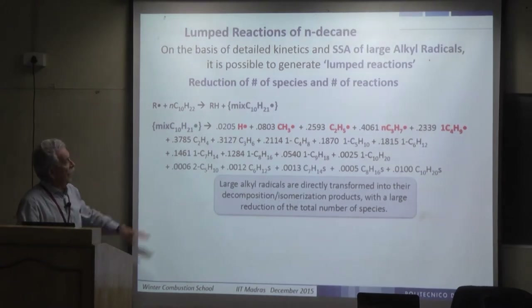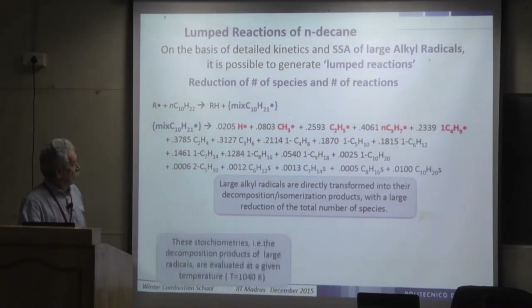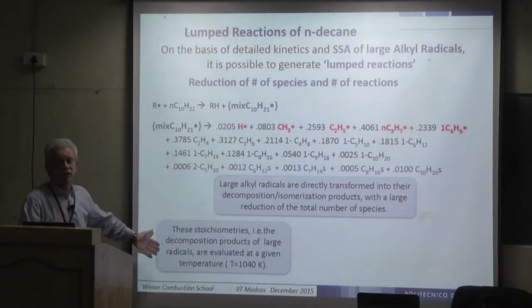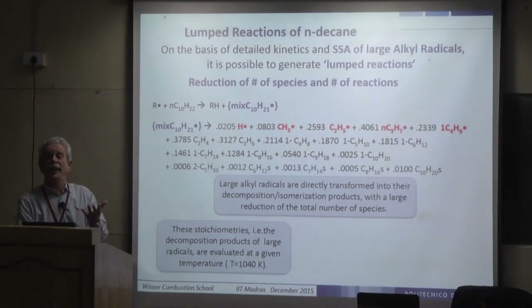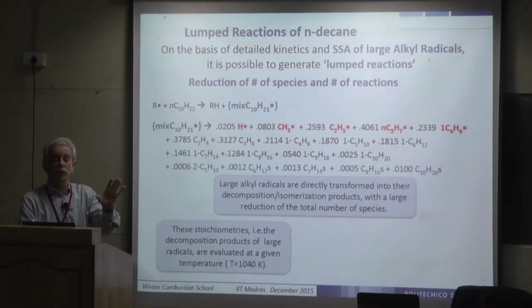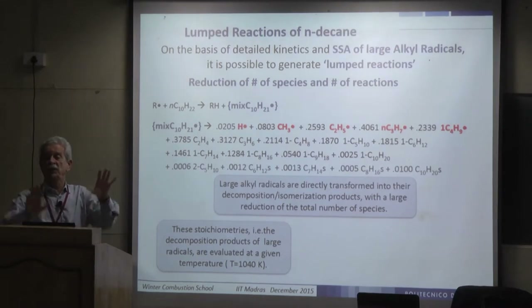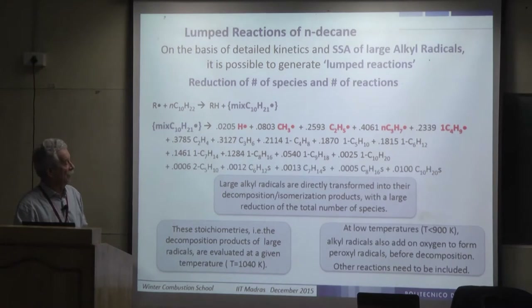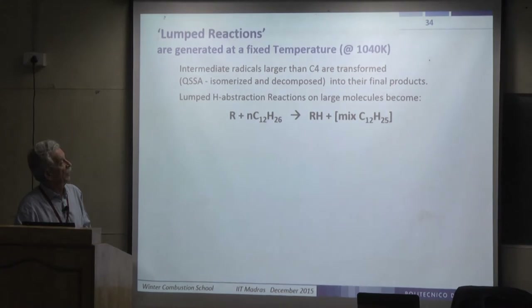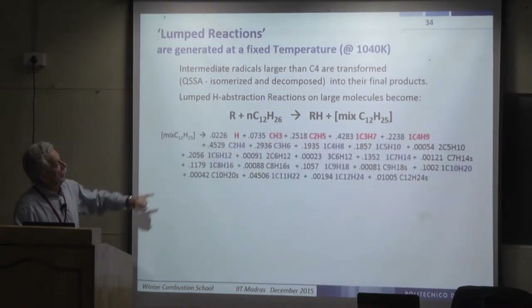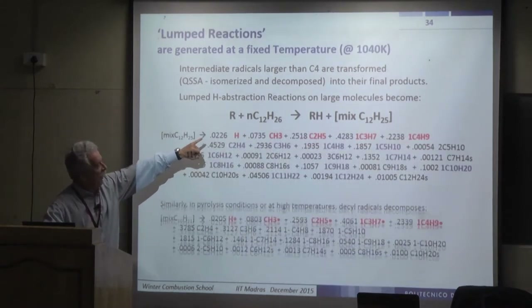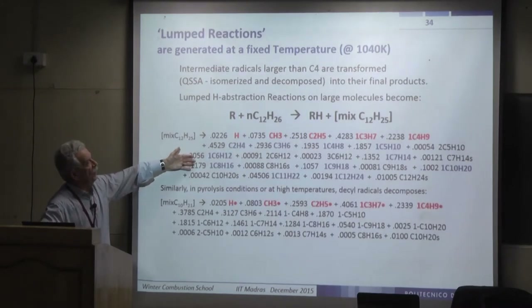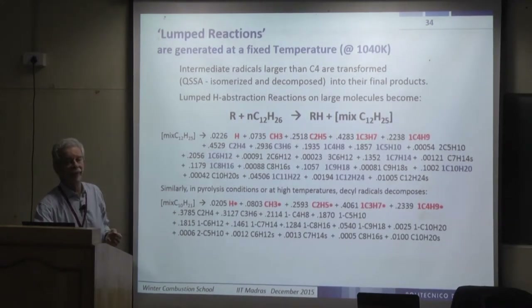At low temperature, the radical can interact with oxygen through the low temperature oxidation path, but if it decomposes, it does so directly forming all radicals down to C4, since higher radicals have already been transformed via the quasi-steady-state assumption. The lumped stoichiometry for normal decane and normal dodecane are very similar: H₂ formation ~2% in both, methyl ~7–8%, ethyl ~25%, butyl ~22–23%.